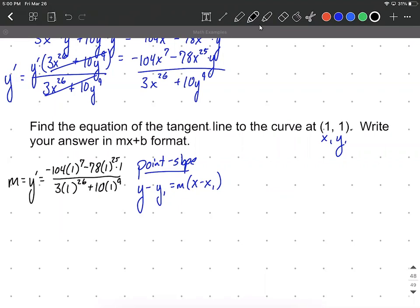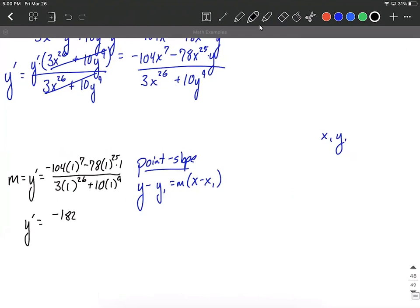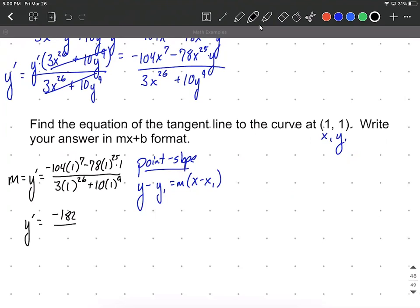All right, so substitute it into y'. Now with a little bit of reducing down here, I think we have negative 104 minus 78 is going to be negative 182. And then 3 plus 10 is going to be 13, which works out to be negative 14.